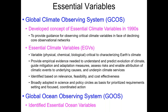So the climate community developed this concept of an essential variable to argue what observations absolutely have to continue to be made in order to understand the climate — to provide a basis for what needs to be observed in the face of the declining core networks.